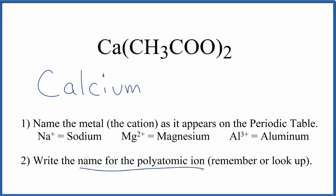Next we write the name for the polyatomic ion. That's the CH3COO. So this is called the acetate ion. We'll write acetate, lowercase a, and you either memorize that this is the acetate ion or, if you're allowed, you look it up on a table of polyatomic ions.